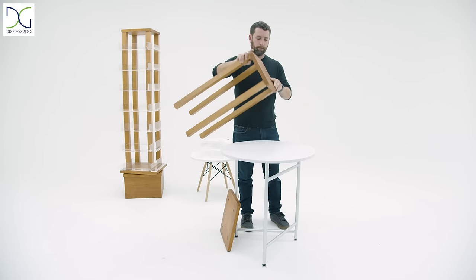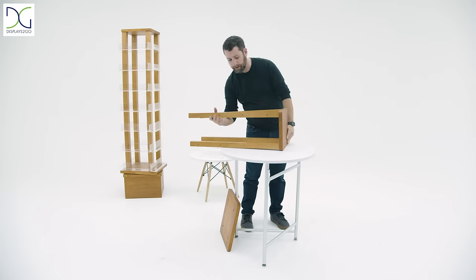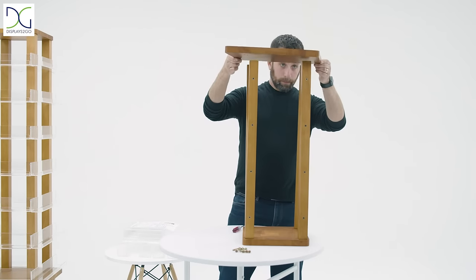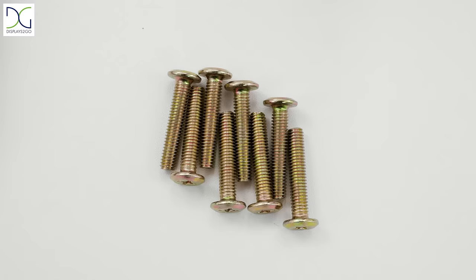Step 2. Hold the poles and the top panel and carefully turn the assembled frame upside down. Attach the bottom wooden panel to the open end of the poles and secure it using eight M6 screws.